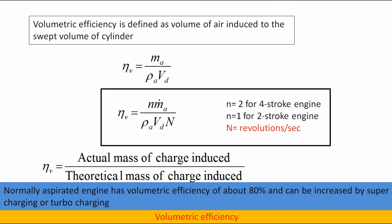Volumetric efficiency is defined as the volume of air induced to the swept volume of the cylinder: η_V = M_A / (ρ_A × V_D). It can also be represented in terms of flow rates: η_V = (n × m_dot_A) / (ρ_A × V_D × N), where n = 2 for a 4-stroke engine and n = 1 for a 2-stroke engine, and N is revolutions per second. η_V can also be viewed as actual mass of charge induced divided by theoretical mass of charge induced. A normally aspirated engine has volumetric efficiency of about 80%, which can be increased by supercharging or turbocharging.